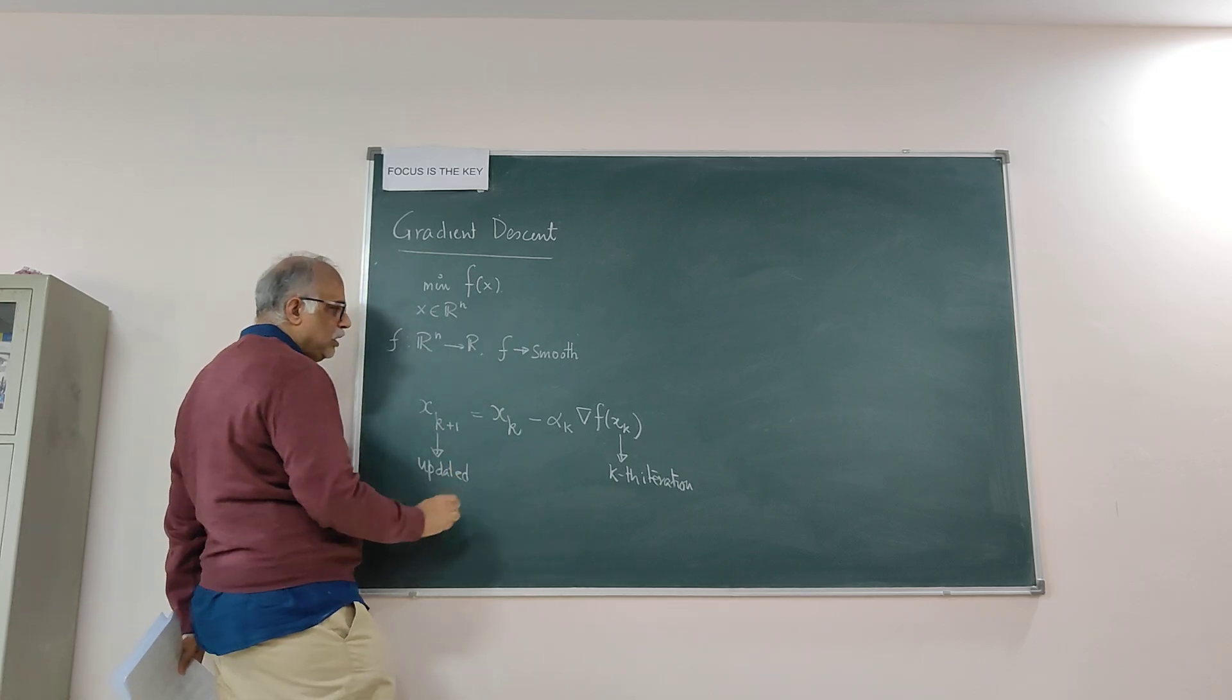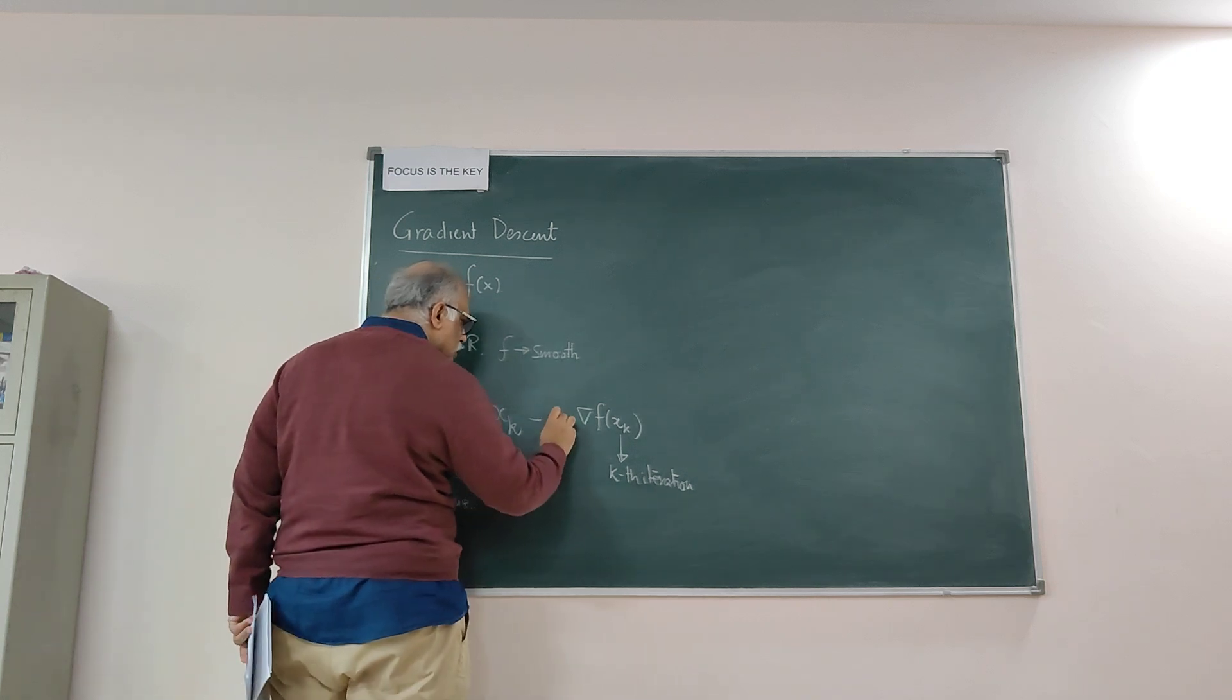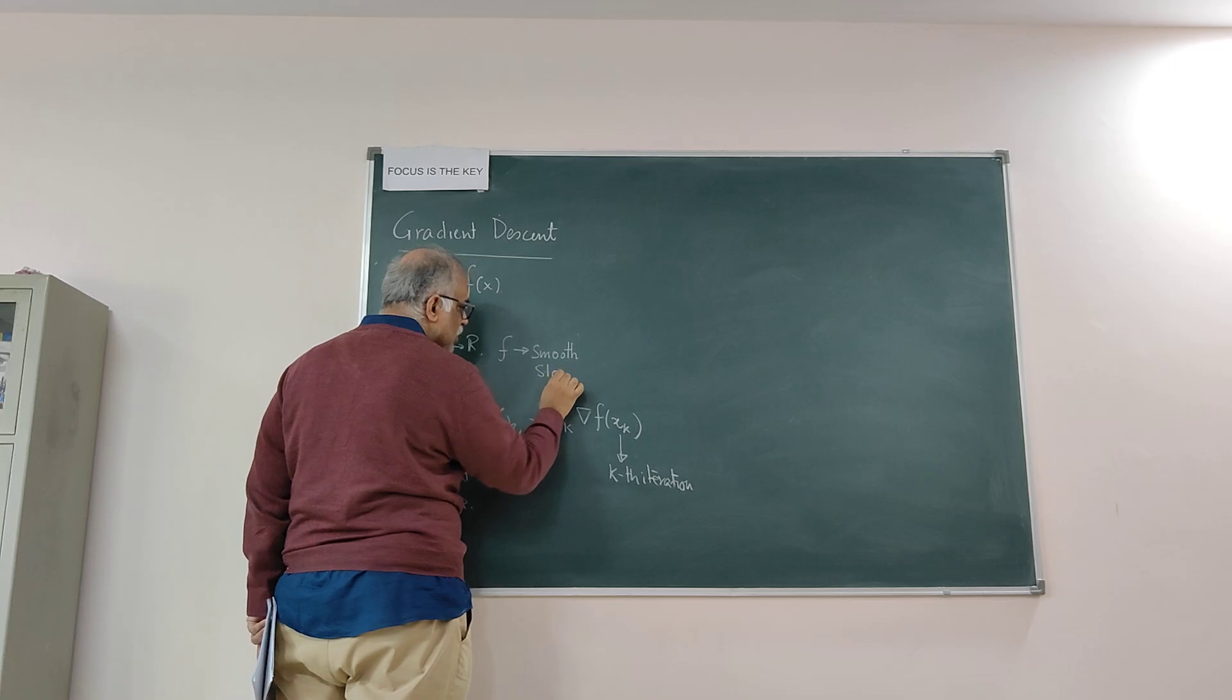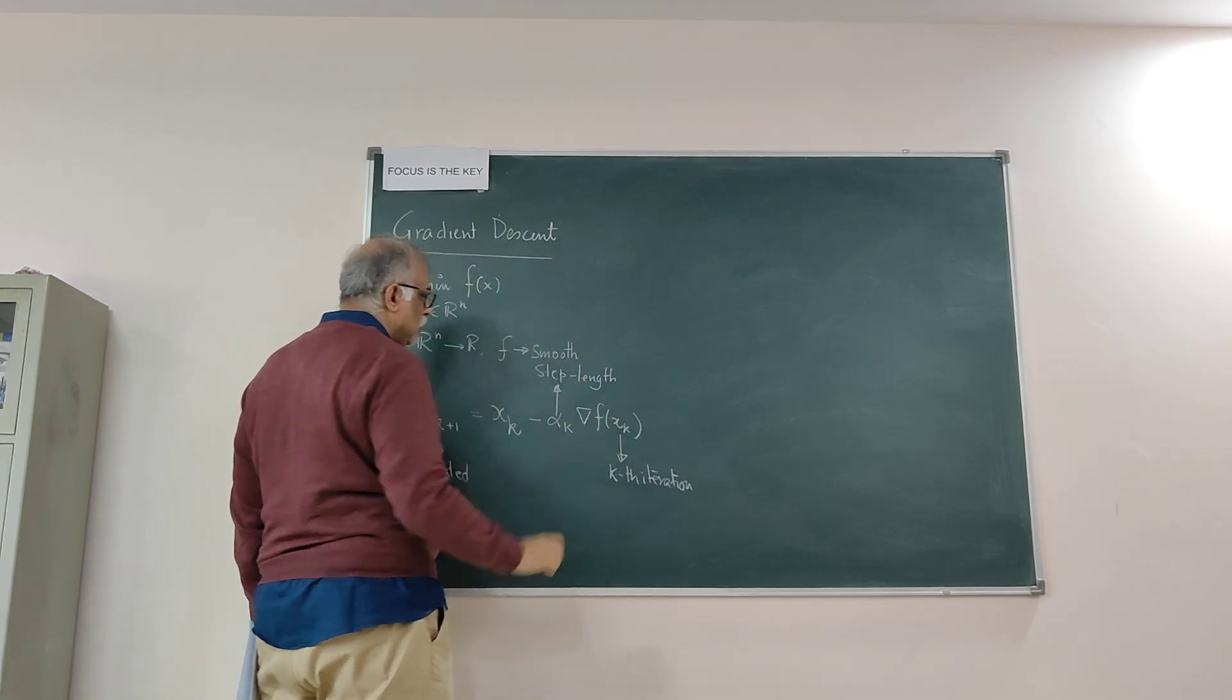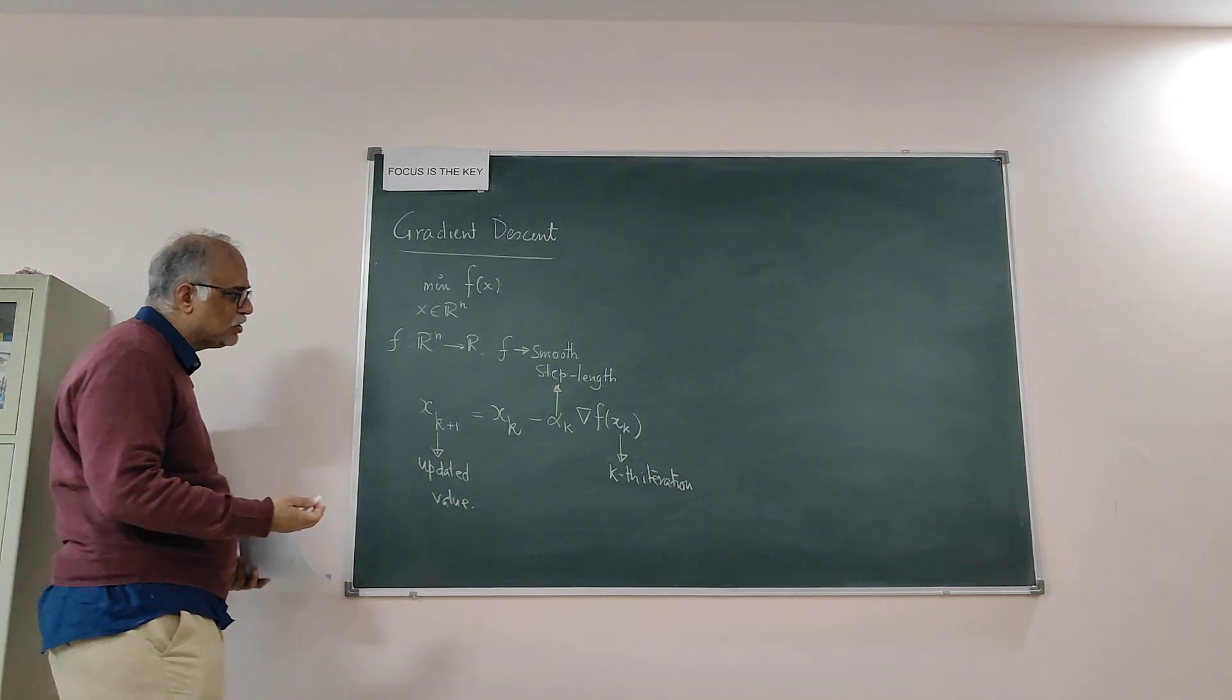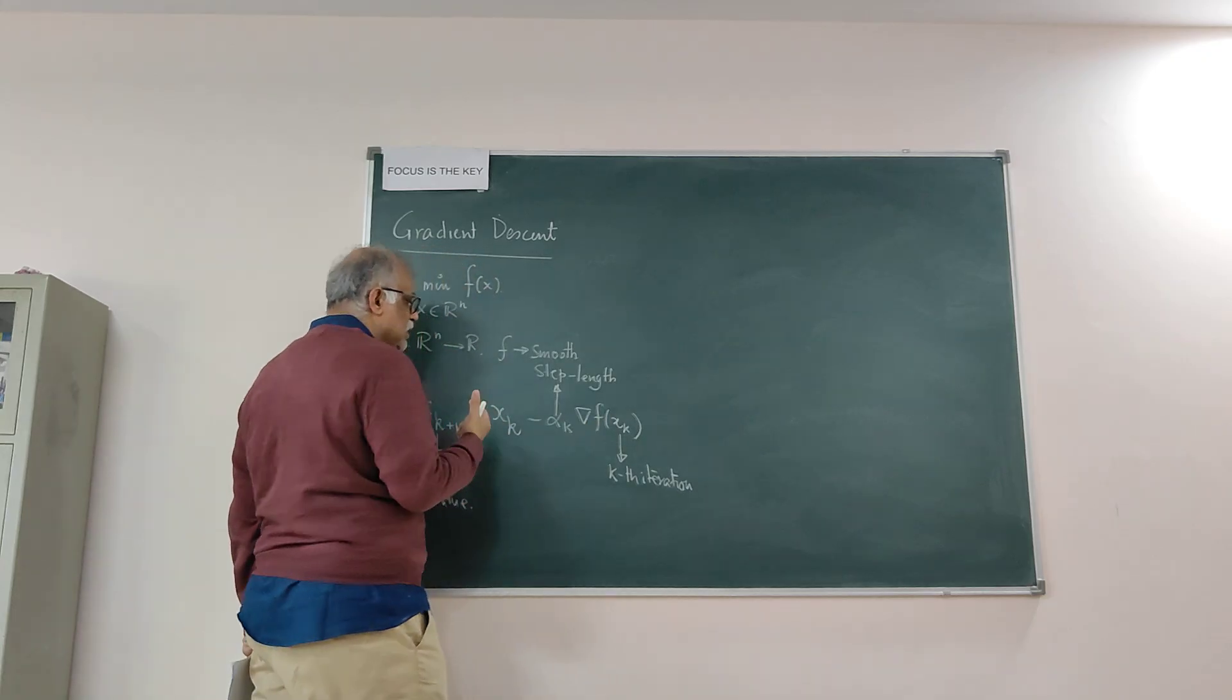This α_k is called the step length, which machine learning people call the learning rate.